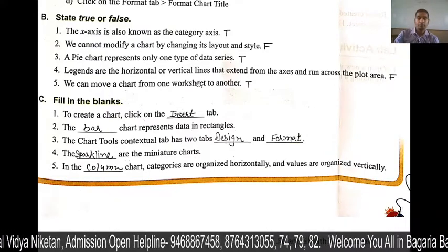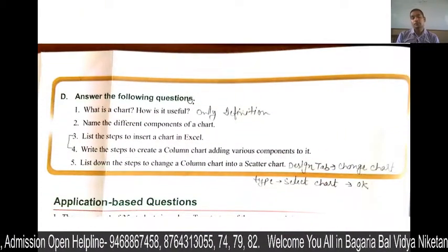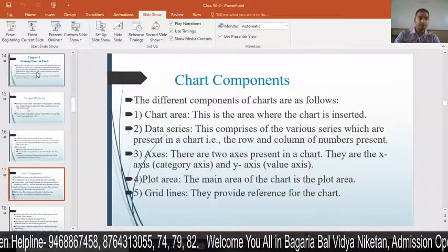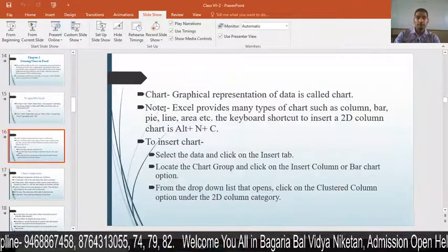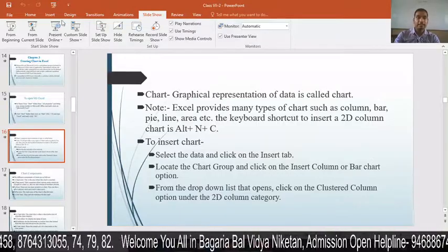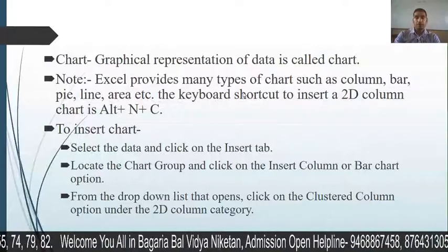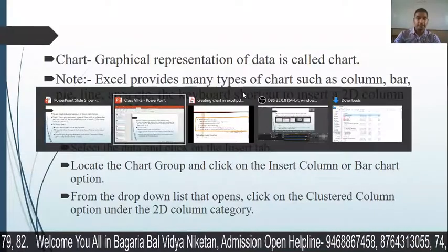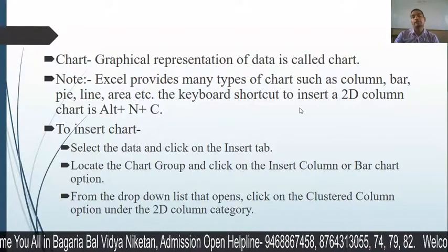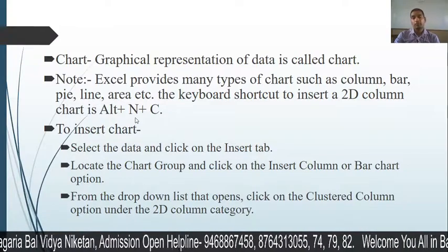Next is: what is a chart and how is it useful? A chart is a graphical representation of data — that is what we call a chart. Next: the keyboard shortcut to insert a 2D column chart is Alt + N + C.